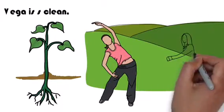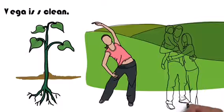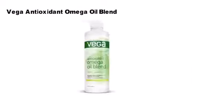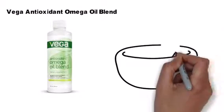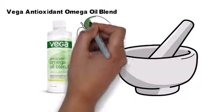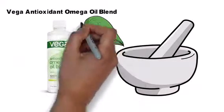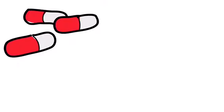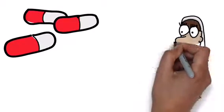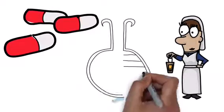Vega Antioxidant Omega Oil Blend is produced from pure, premium, unrefined, certified organic botanical sources. Cold pressed without distillation, chemicals, synthetic purification agents or solvents, their oils retain their natural antioxidants and phytosterols.